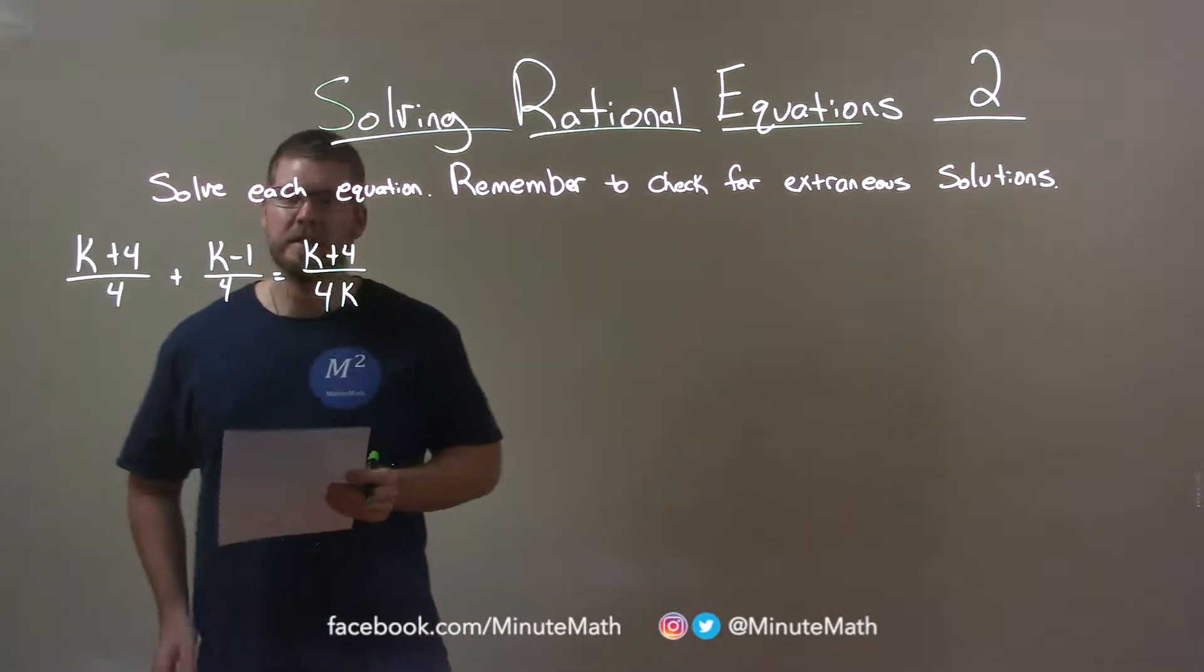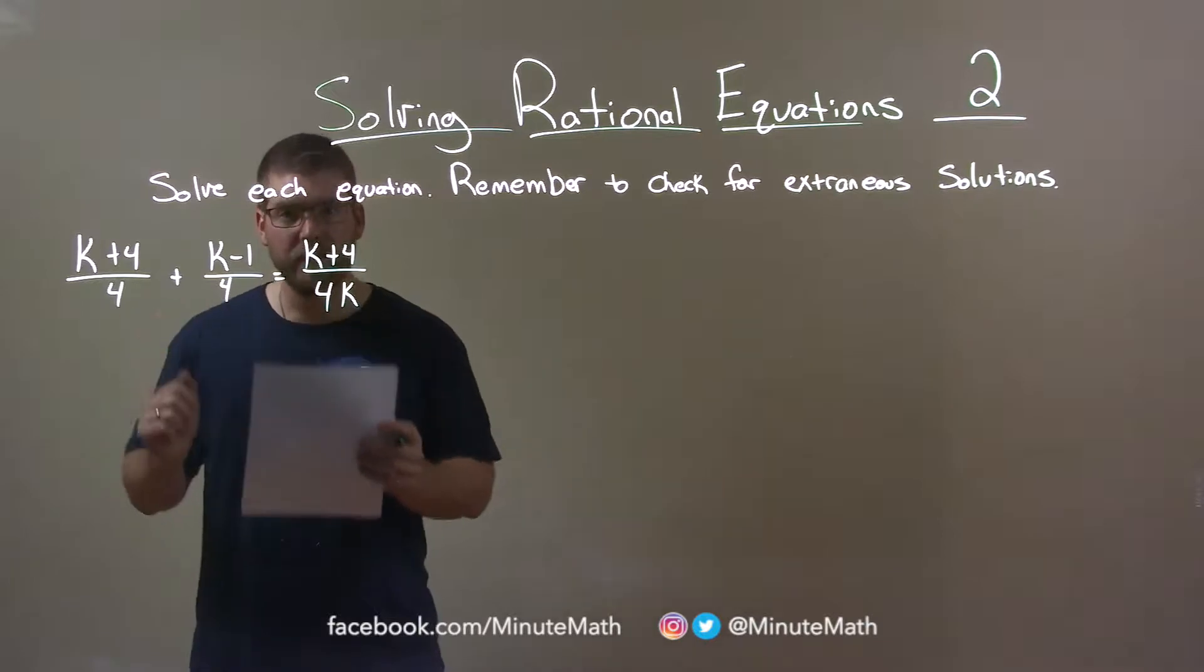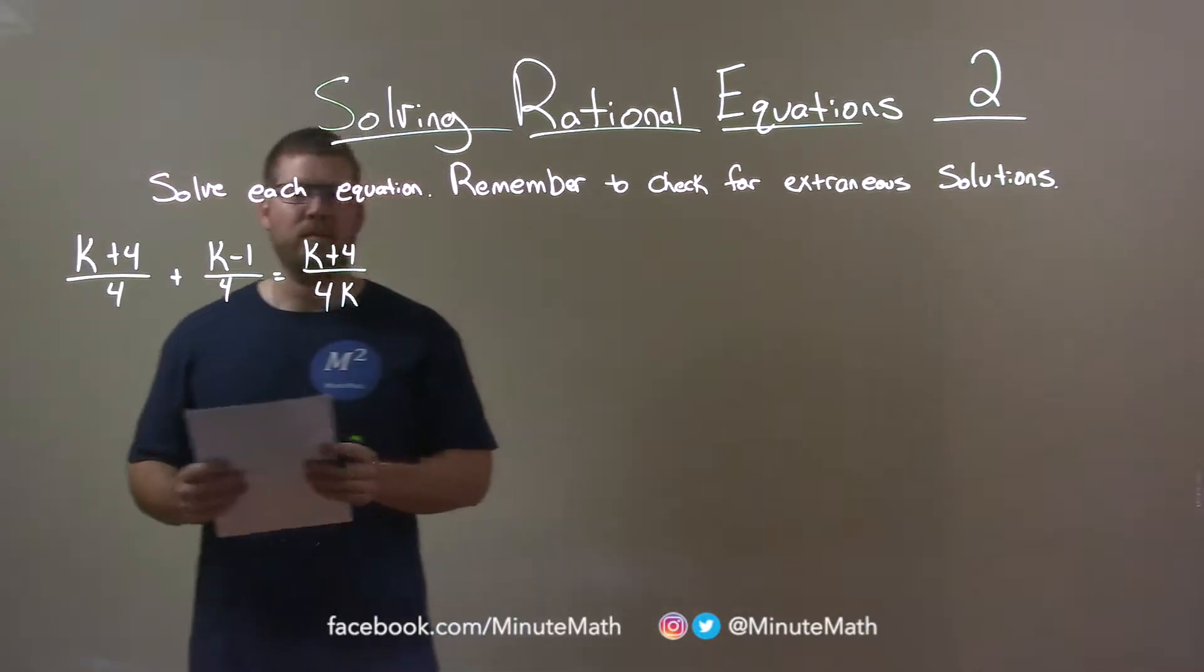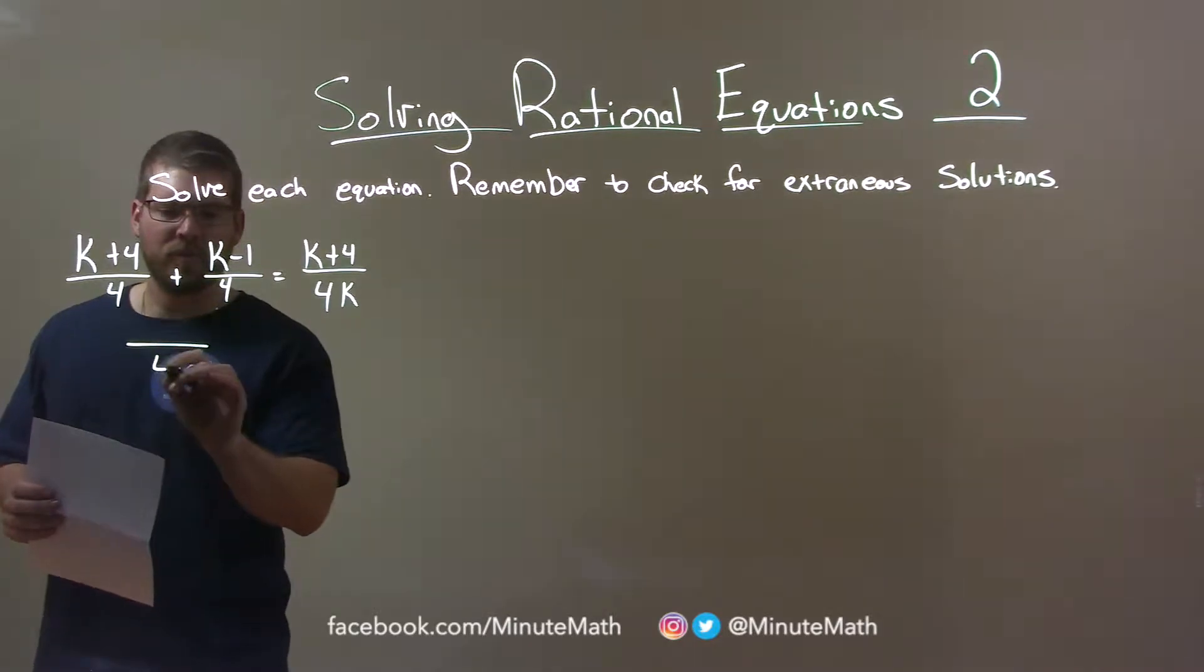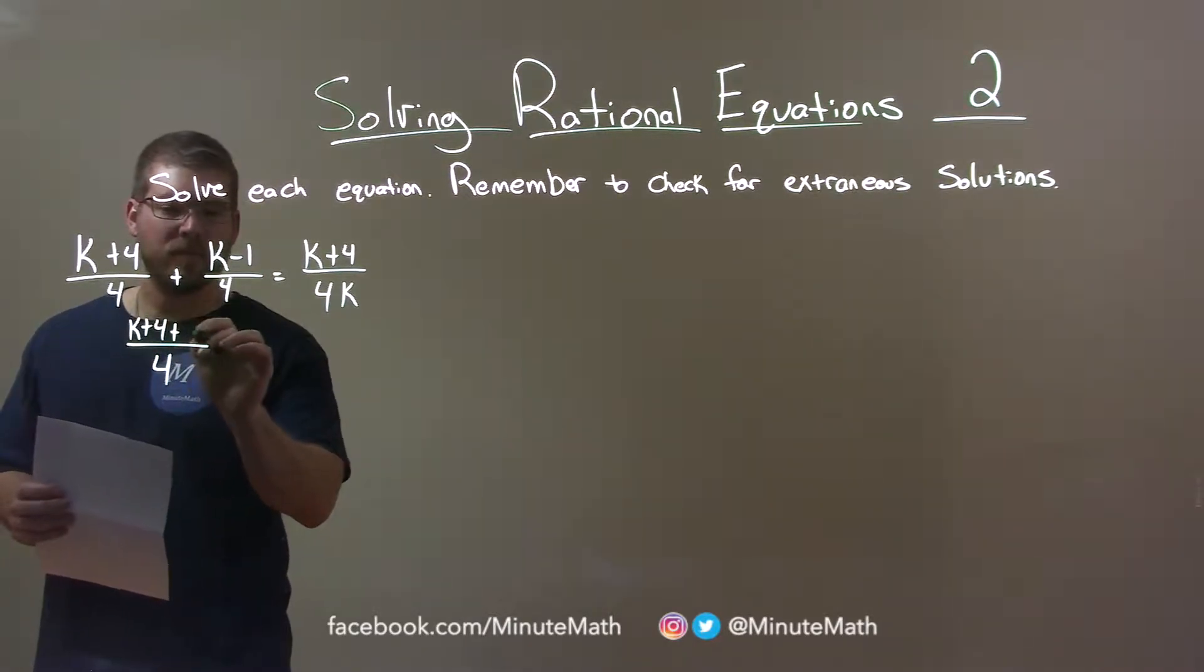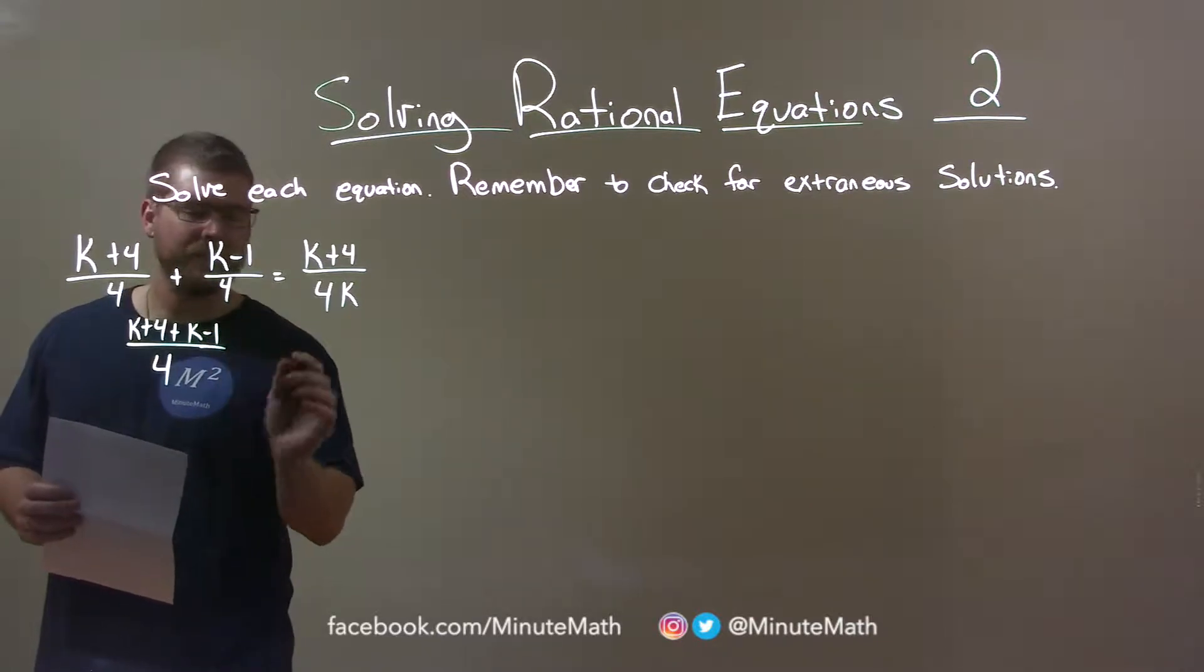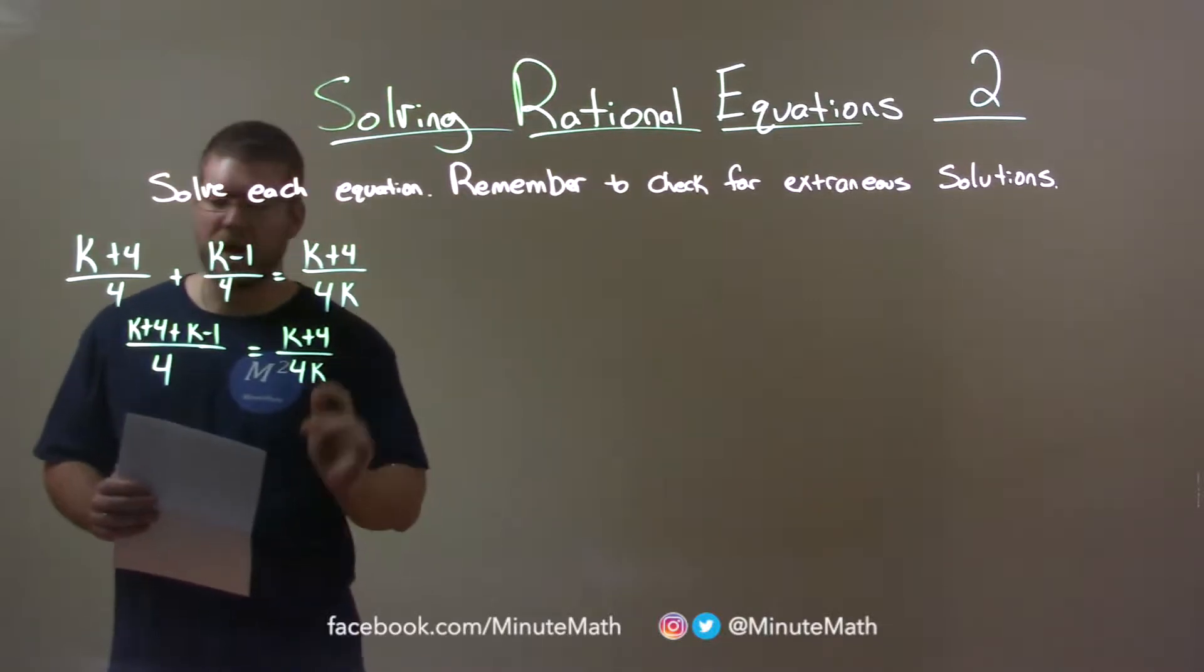Well, the first thing I'm going to do here is on the left hand side I can add these fractions together. I can combine them because they have the same base which is 4. So let's go do that. Together it becomes one fraction of 4 and we have k plus 4 here plus k minus 1. And that's equal to k plus 4 over 4k.